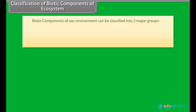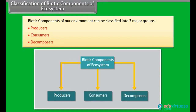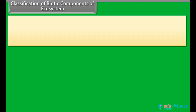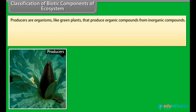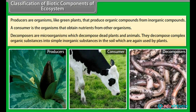Biotic components of our environment can be classified into three major groups: producers, consumers, and decomposers. Producers are organisms like green plants that produce organic compounds from inorganic compounds. A consumer is an organism that obtains nutrients from other organisms. Decomposers are microorganisms which decompose dead plants and animals, breaking down complex organic substances into simple inorganic substances in the soil, which are again used by plants.